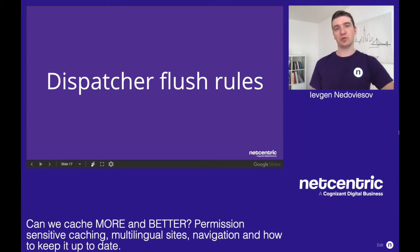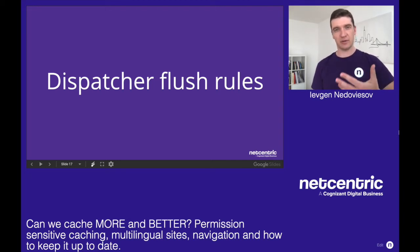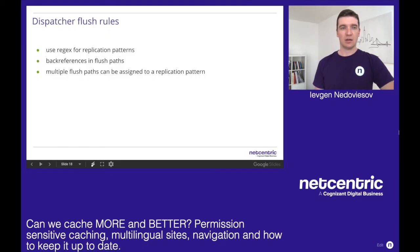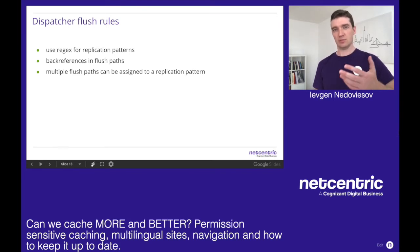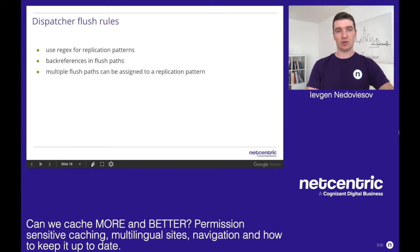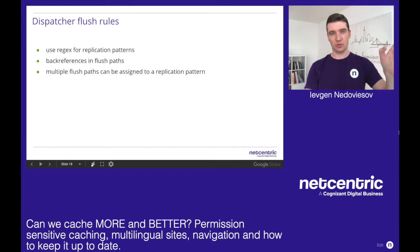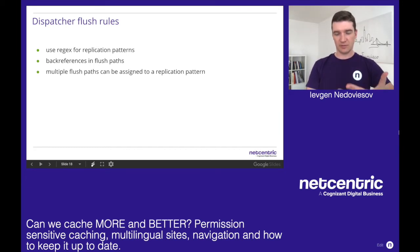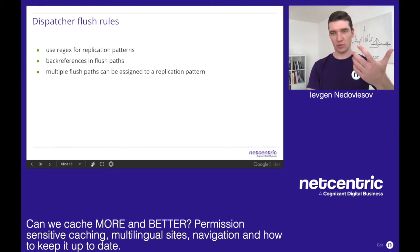Dispatcher flush rules allow you to react on activating some path and do more than just flushing that path. They use regex for replication patterns and you can configure whatever you want to flush based on the regex for the path. It also has back references in the flush path, so you can take part of the path from the activation using regex and do replication on something else. You can also have more than one path or pattern for one match.